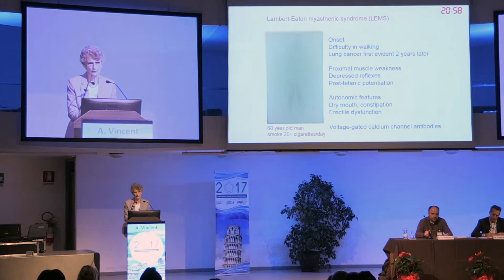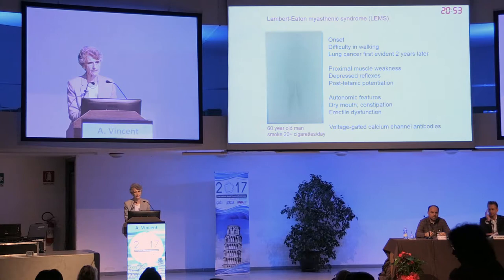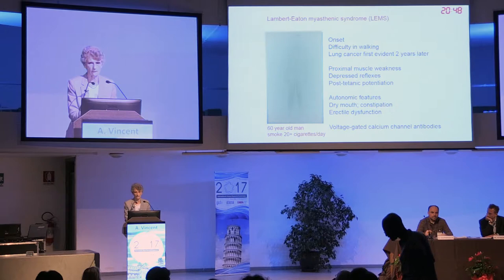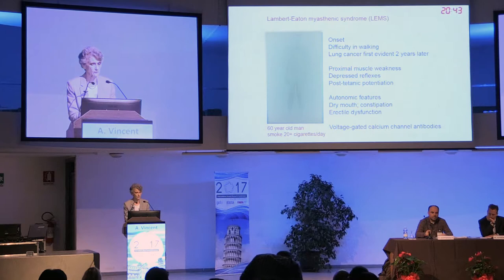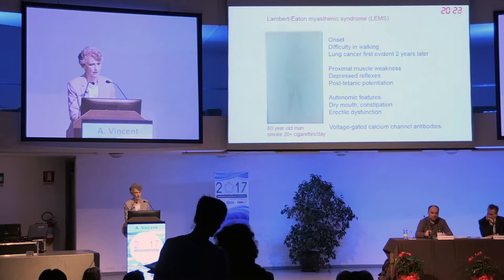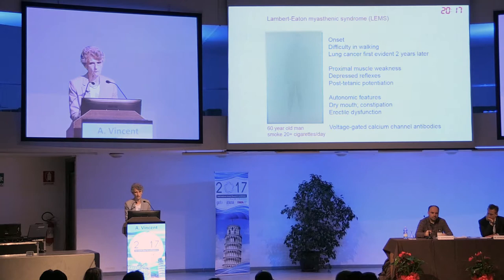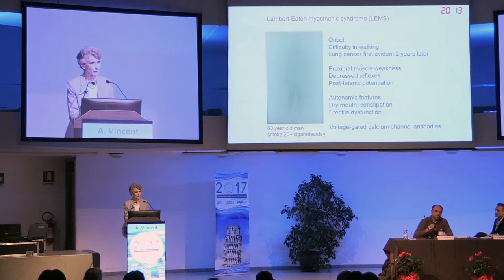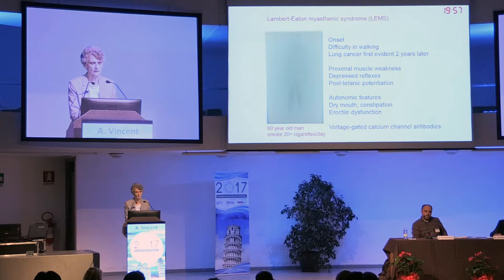Now I'm going to turn to something slightly different - the Lambert-Eaton Myasthenic Syndrome. This is an antibody-mediated disease of the nerve-muscle junction and, on the face of it, nothing to do with the cerebellum. One patient had onset of difficulty walking, lung cancer diagnosed two years later. He had been a heavy smoker, with proximal muscle weakness, depressed reflexes, post-tetanic potentiation, and autonomic features including dry mouth, constipation, and erectile dysfunction. He had voltage-gated calcium channel antibodies. We know from studies in the 80s and 90s that these antibodies do cause the disease - they bind at the nerve-muscle junction to the proximal nerve terminals and prevent release of the transmitter acetylcholine.